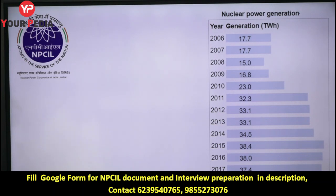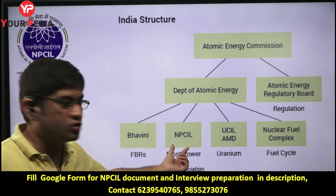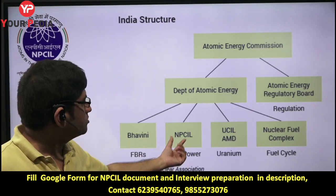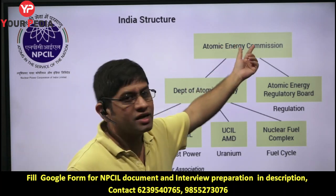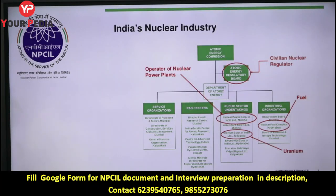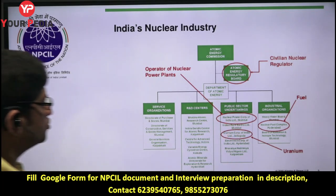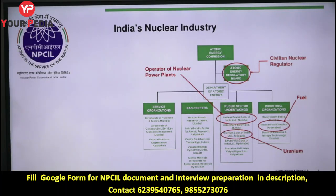The atomic energy commission structure flows as: Atomic Energy Commission → Department of Atomic Energy → Atomic Energy Regulatory Board, and NPCIL comes under the Department of Atomic Energy. You should know where NPCIL stands in this structure, and also the public sector undertakings under this department. BARC (Bhabha Atomic Research Centre) is the R&D center, also coming under the Department of Atomic Energy.